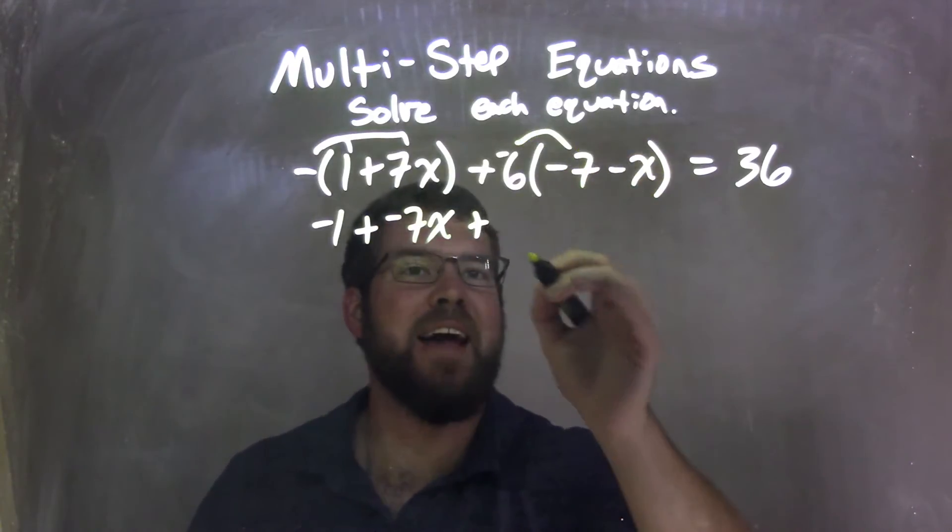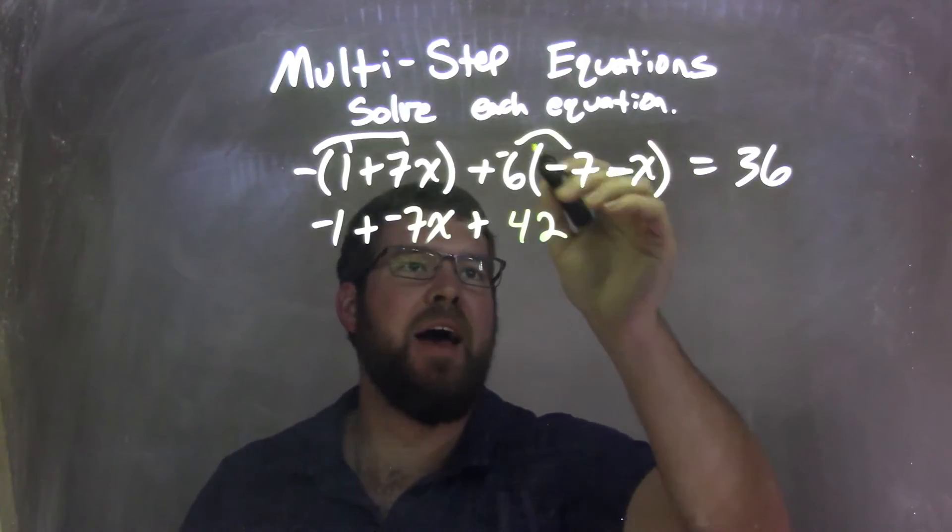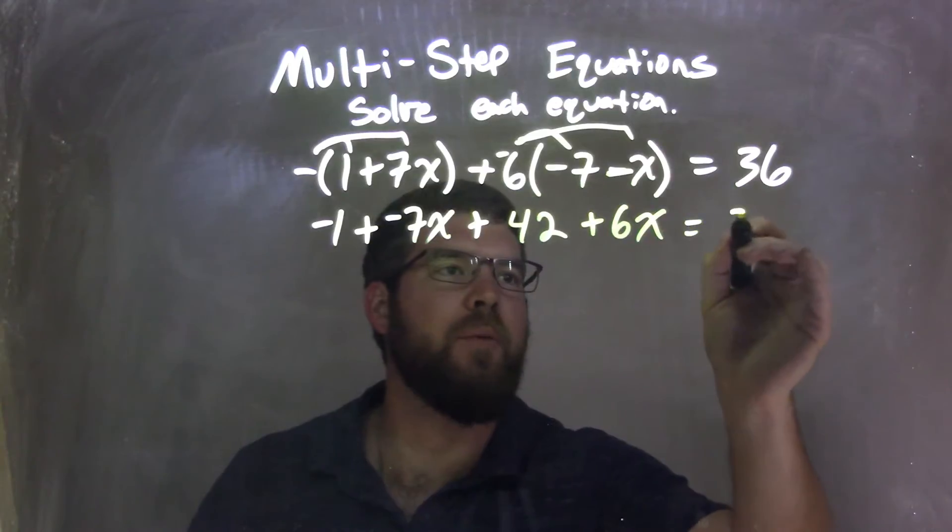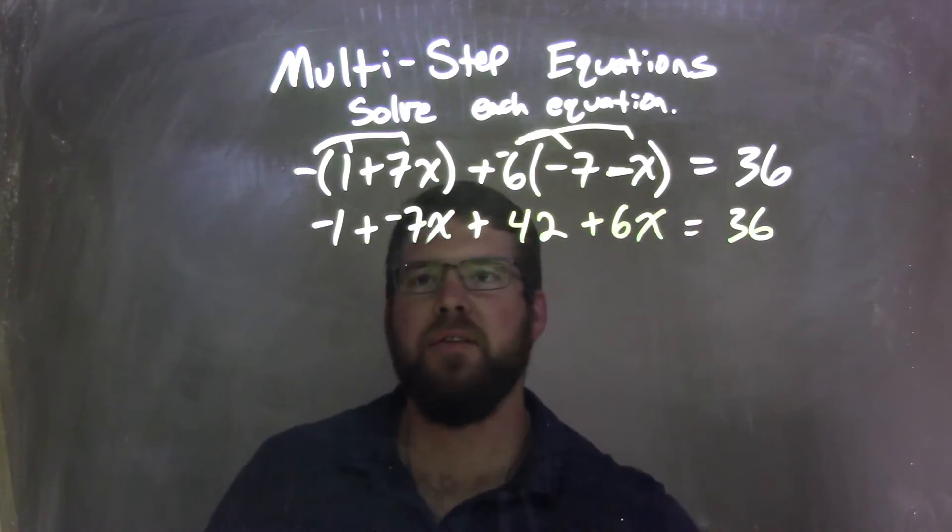Negative 6 times negative 7 is a positive 42. Negative 6 times, in this case, minus x, is a positive 6x, equals 36. That minus x and the negative here makes it a positive 6x.